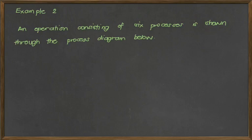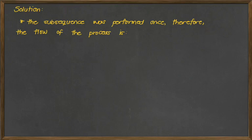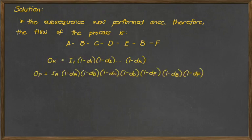So let's proceed to the next example. So an operation consisting of six processes is shown through the process diagram below. So we want to determine the output of the line if there were 20,000 input units, defect rates are constant at 2%, and the subsequence BCDEB is performed once. Now, if you look closely in our process diagram, it's just a straight line. It just happened that the diagram for the subsequence was simplified. So if the subsequence is performed once, we'll have the following process flow of ABCDE, and then it goes back to B, and then from B, it goes to S. And from there, using the general formula, we will be arriving with the actual solution formula.